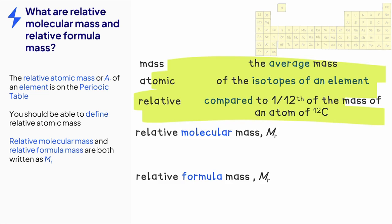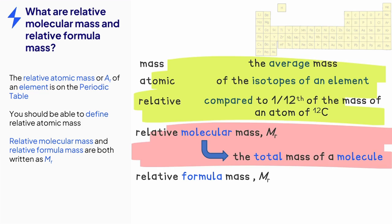Relative molecular mass and relative formula mass are both written as Mr, but there is a subtle difference. Relative molecular mass is the total mass of a molecule. Relative formula mass is the total mass of an ionic compound.